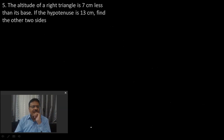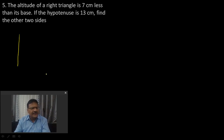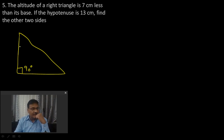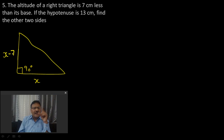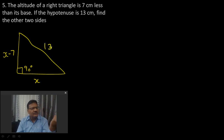Next question: The altitude of a right triangle is 7 cm less than the base. The hypotenuse is 13 cm. Let base = x, so altitude = x − 7. Let's draw the right triangle with the 90° angle, altitude (x − 7), base x, and hypotenuse 13.